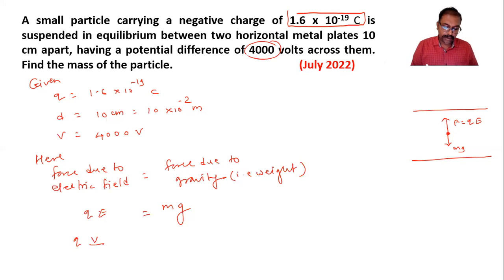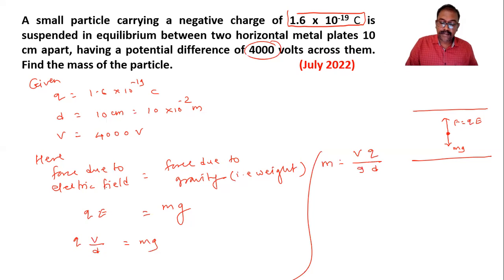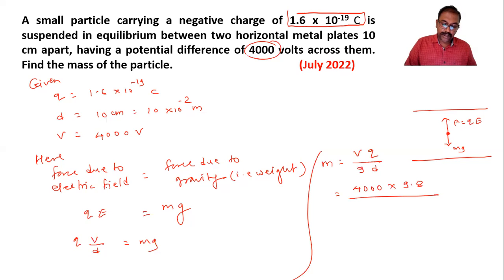So qV by d is equal to mg. This is the formula. Now we can write the formula for m: m is equal to V multiplied by q, divided by g multiplied by d. Substituting the values: 4000 multiplied by q, which is 1.6 into 10 raise to minus 19.